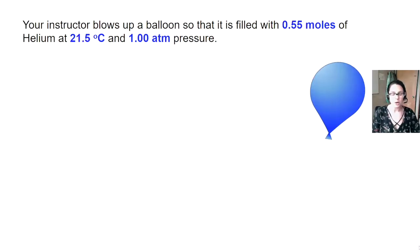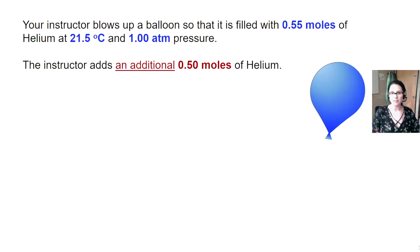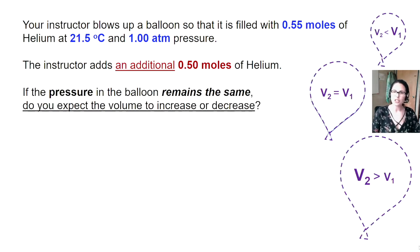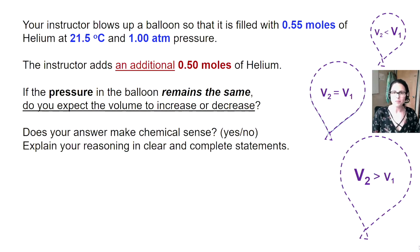Your instructor blows up a balloon so that it is filled with 0.55 moles of helium at 21.5 degrees Celsius and 1.00 atmospheres of pressure. The instructor adds an additional 0.50 moles of helium. If the pressure remains the same, do you expect the volume to increase or decrease? Be sure that your answer makes chemical sense based on your understanding of gas theory. You should be able to explain your reasoning in clear and complete statements.